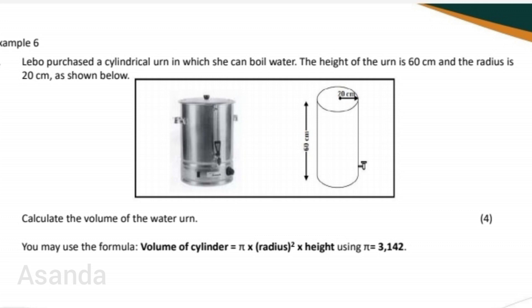You may use the formula: volume of a cylinder equals π times radius squared times height, using π = 3.142. So it's straightforward. All I have to do is calculate the volume using the formula, and the shape is a cylinder.